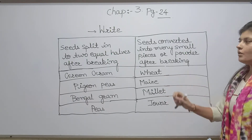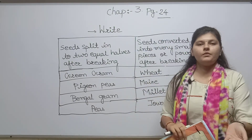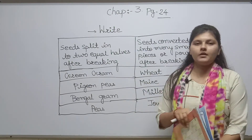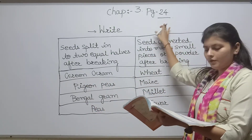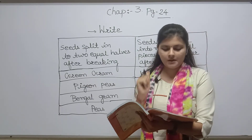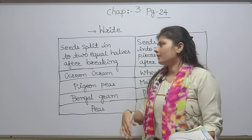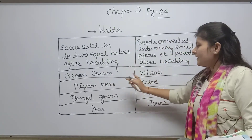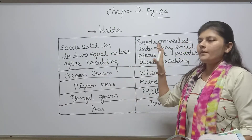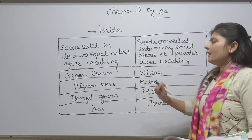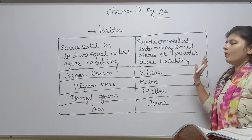So why are we discussing this again? Because in this chapter you have to learn about monocot and dicot. If you see in your book there is a blue color box on page number 24. It says seeds which can be split into two equal halves are known as dicot seeds. And the seeds which are not split into two equal halves are called monocot.